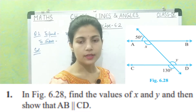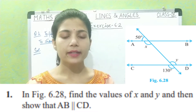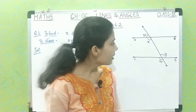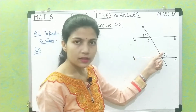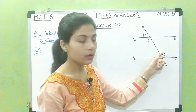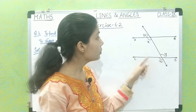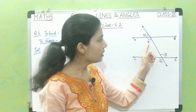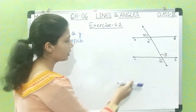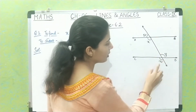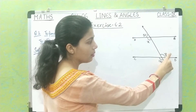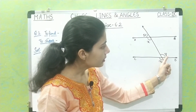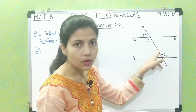Find the values of X and Y and then show that AB is parallel to CD. So as you can see here, X and Y are the two values you have to find out, and then you also have to show that lines AB and CD are parallel to each other. So first we will find the value of X and Y. In this figure, Y and angle 130 are vertically opposite angles.